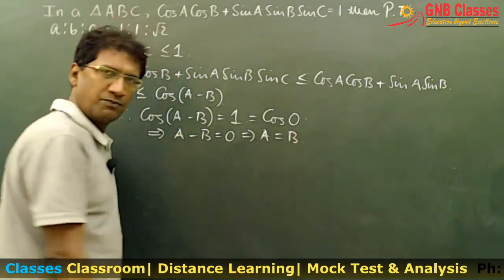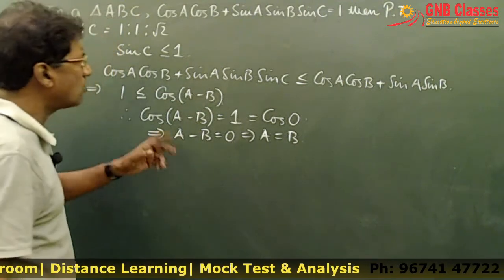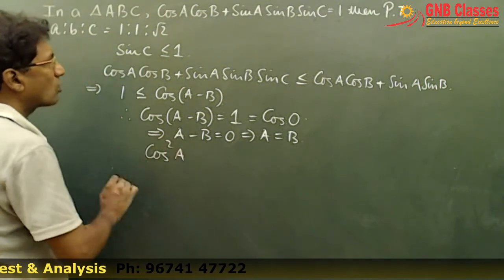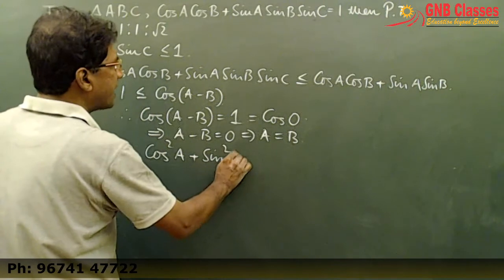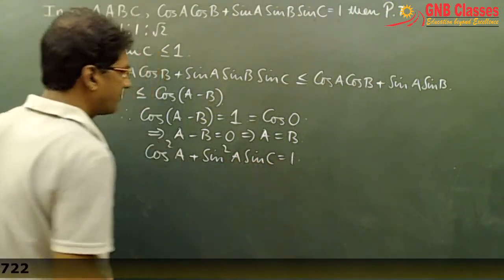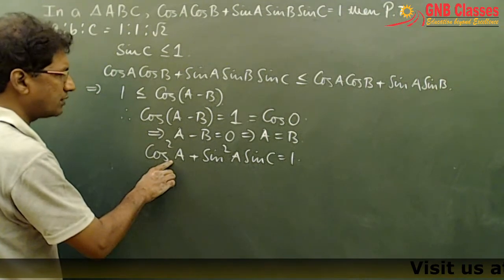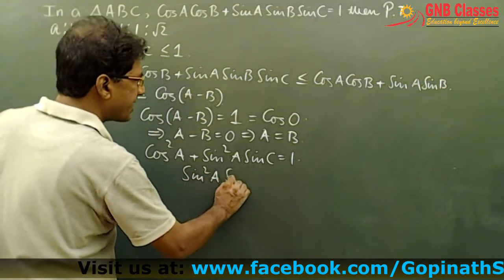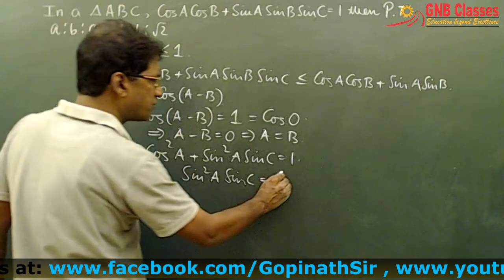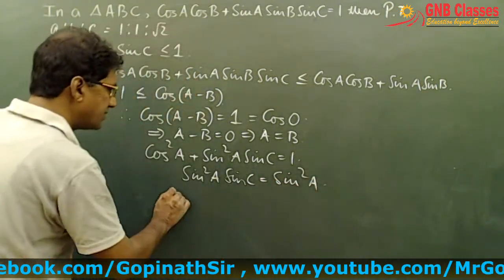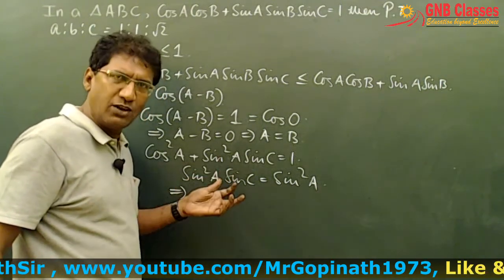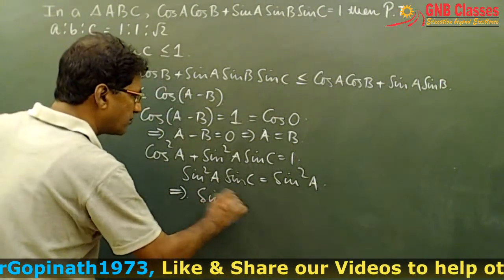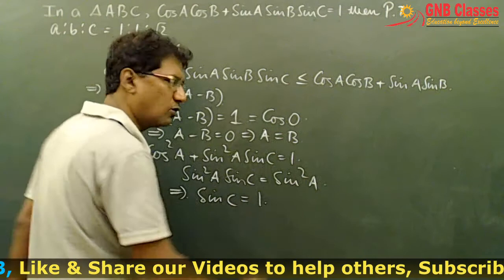This implies A equals B. Now putting A = B in the given equation, we get cos²A + sin²A·sinC = 1. Rearranging, sin²A·sinC = 1 - cos²A = sin²A. Since A cannot be 0 in a triangle, we cancel sin²A from both sides to get sinC = 1.